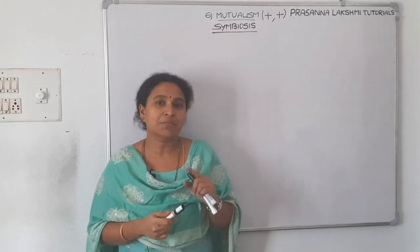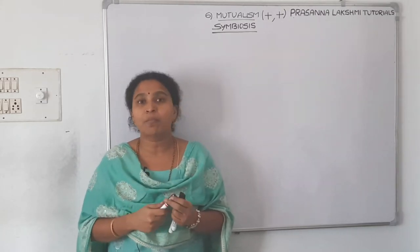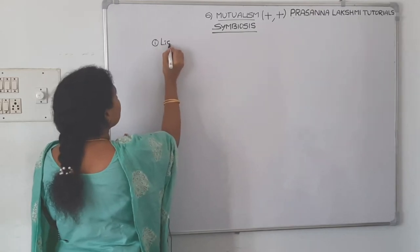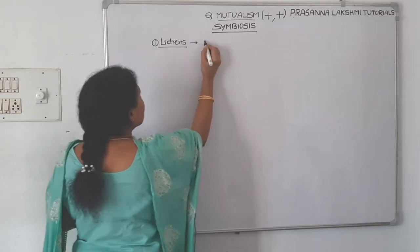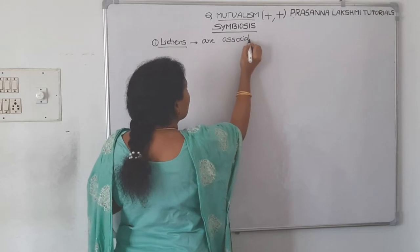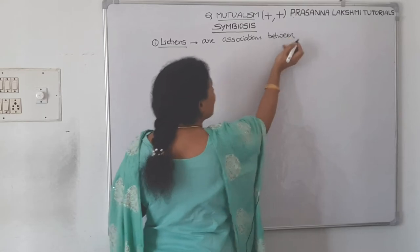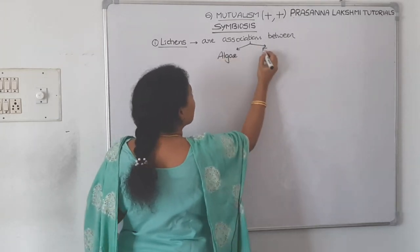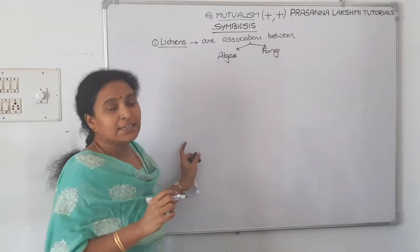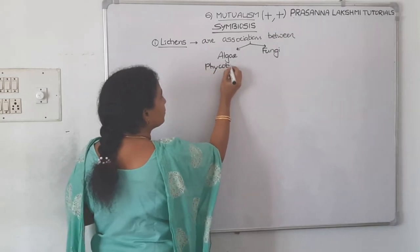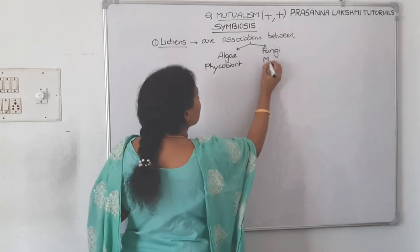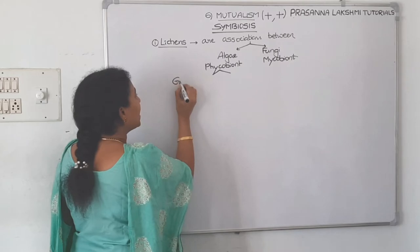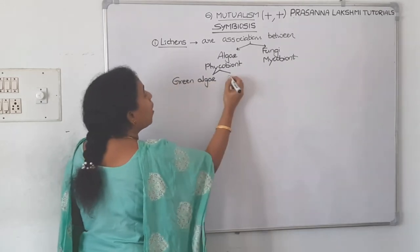The first example for mutualism is lichens. You will study lichens in detail in the 11th standard NCERT Chapter 2, Biological Classification. Lichens are symbiotic associations between algae and fungi. The algal component of lichen is called phycobiont and the fungal component is called mycobiont. Green algae or blue-green algal members will form symbiotic associations with fungi.